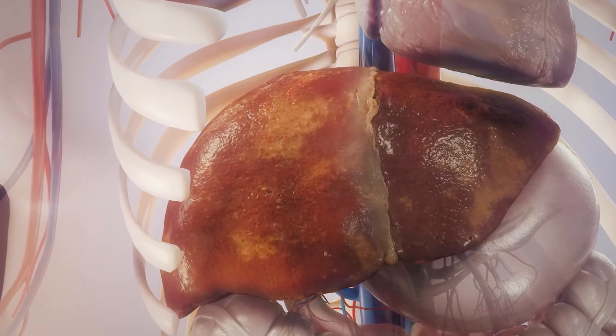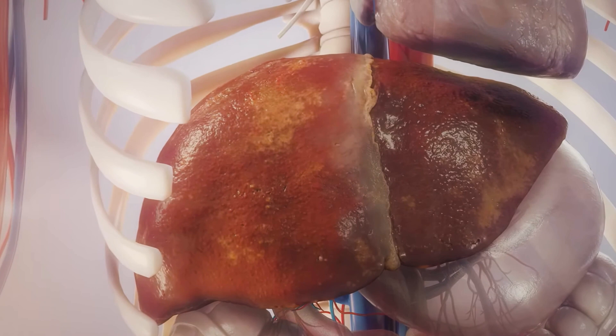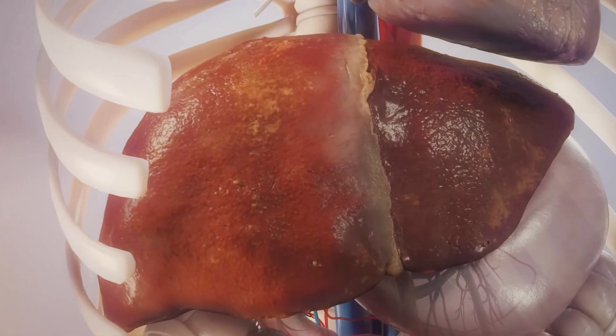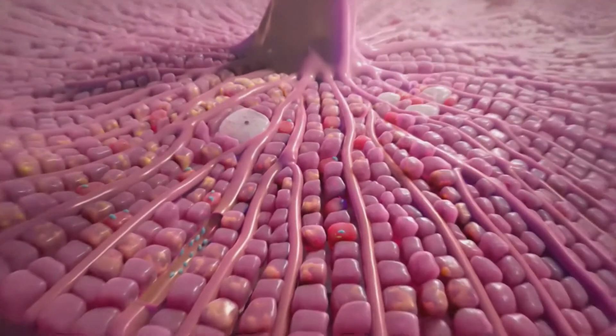If you think about what's required to build a regenerative organ, it first requires that the organism somehow sense that the organ's been injured or compromised. And then you have to produce some sort of signal in response to that sensing that can fall back on the injured organ and tell that organ to regenerate the missing part.